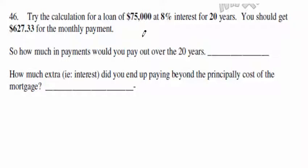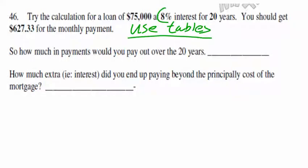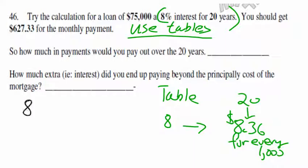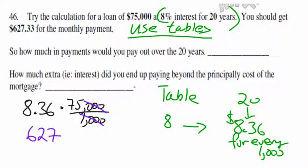Let's try a calculation for a loan of seventy-five thousand dollars at eight percent interest over a twenty-year amortization. Look it up in the tables: under twenty years adjacent to eight percent, I get eight dollars and thirty-six cents per thousand. Multiply that by seventy-five thousands — your total monthly payment is six hundred twenty-seven dollars for your seventy-five thousand dollar loan.